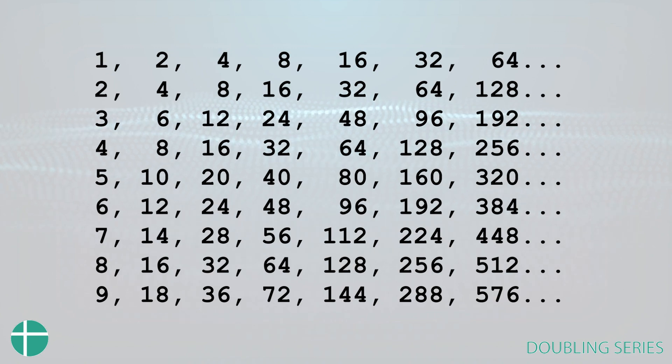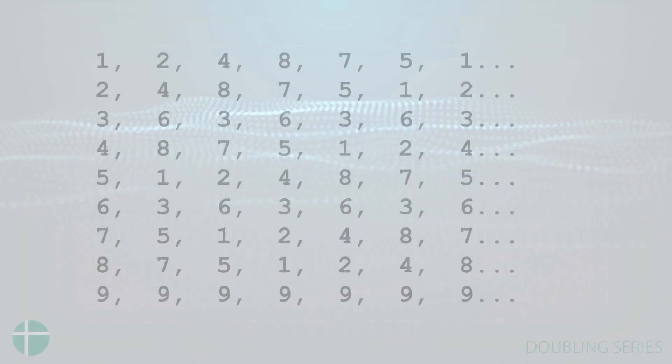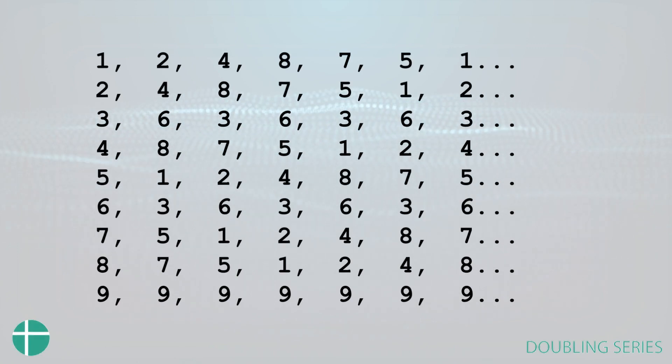And then from this point, you just want to convert all these numbers to their root number. And you'll get something that looks like this. You'll notice in the top row, our doubling series: 1, 2, 4, 8, 7, 5. In the second row, we have 2, 4, 8, 7, 5, 1, 2, and so on. This pattern will continue.